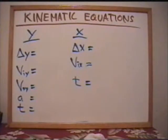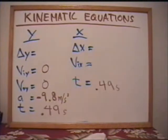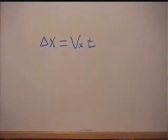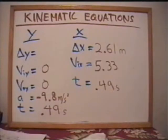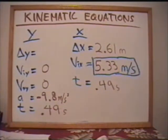But let's see your data. Acceleration is negative 9.8 meters per second squared due to gravity, but VIY and VFY are both 0 meters per second. Time is also 0.49 seconds, as can be seen from the video. And the distance measured was 2.61 meters. Therefore, by using this equation and plugging in our values, we can find the velocity of the projectile. Don't forget your units. 5.33 meters per second.